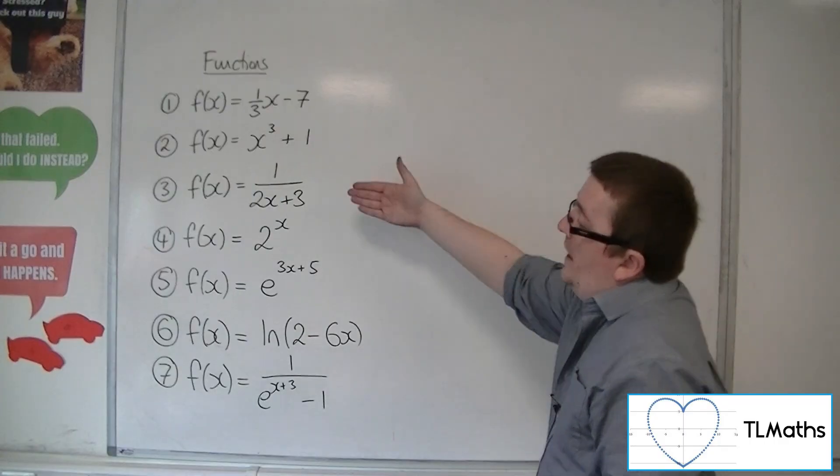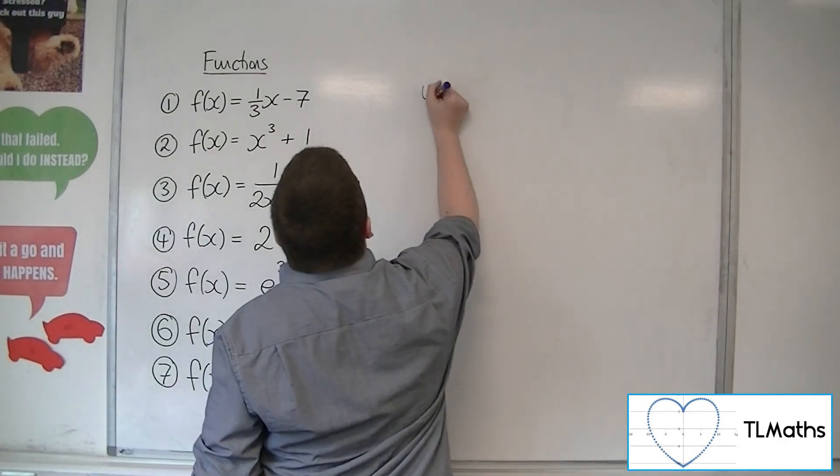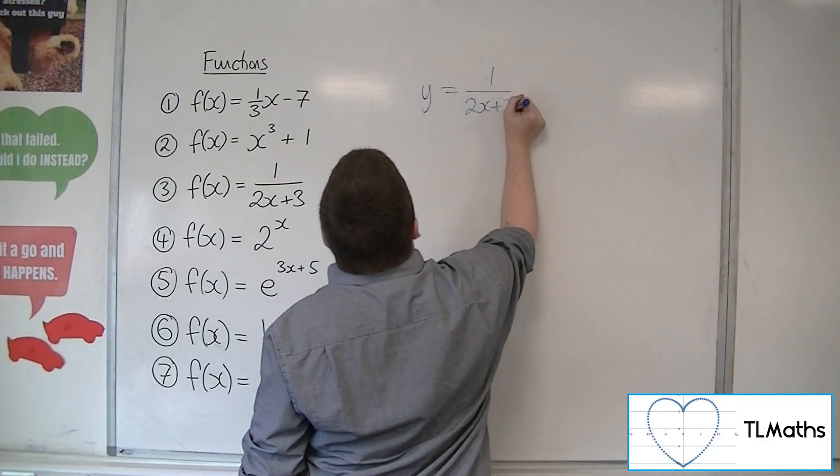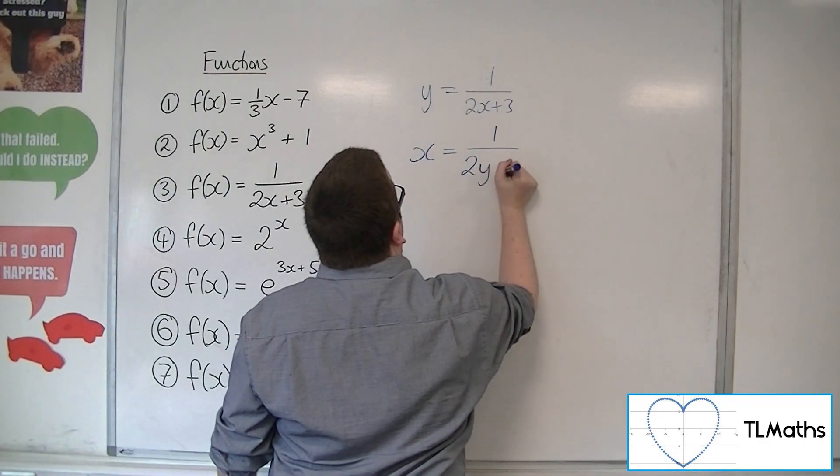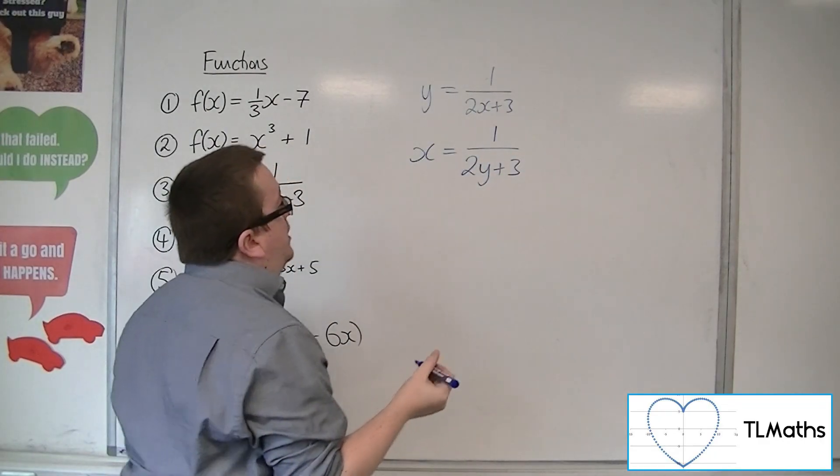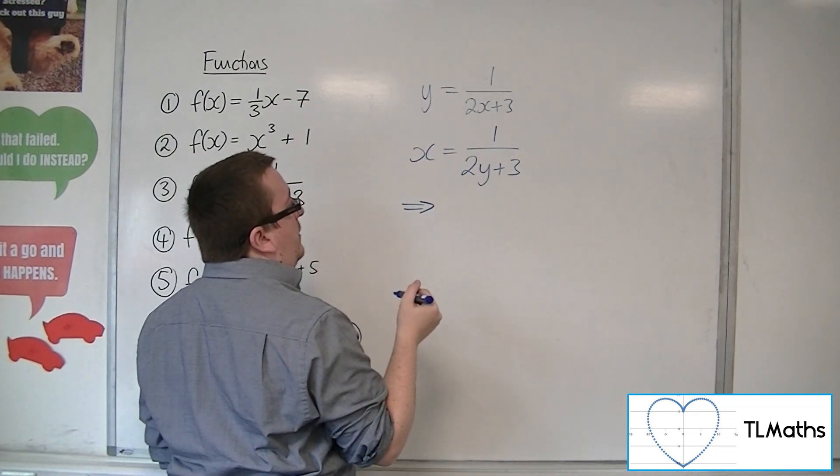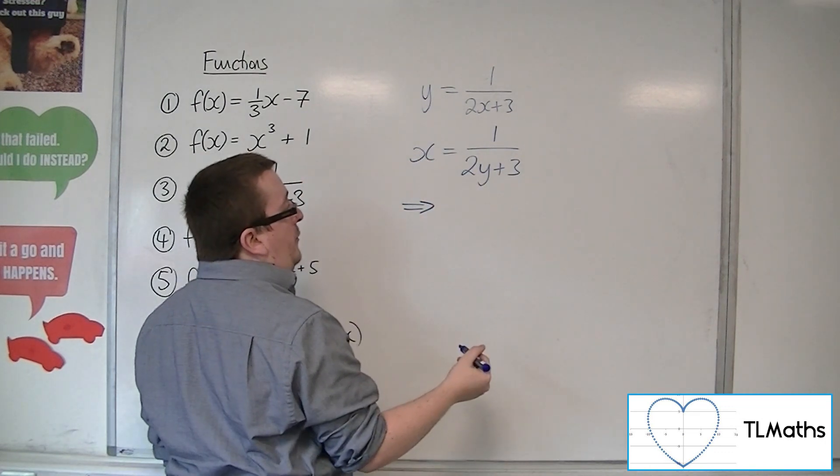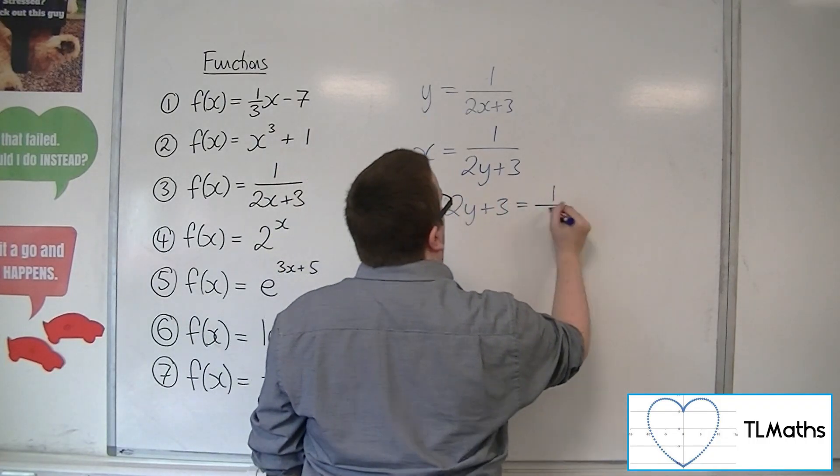So, f(x) = 1/(2x + 3). So y = 1/(2x + 3). Swap the x's and y's. I'm then going to rearrange this by multiplying both sides by the 2y + 3 and dividing both sides by the x. So 2y + 3 must be 1/x.